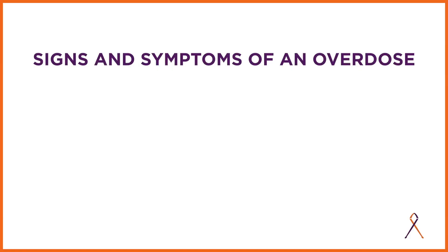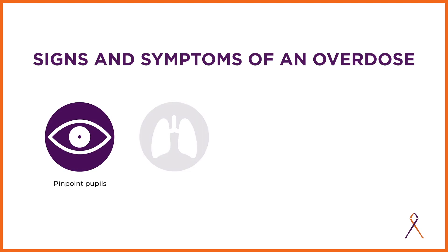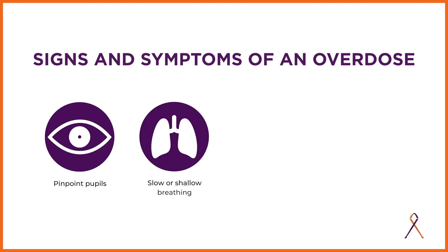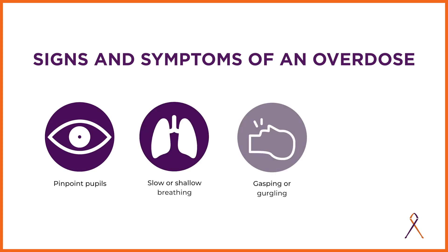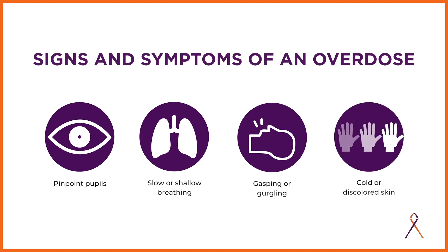A reminder: symptoms of an overdose can include pinpoint pupils, slow or shallow breathing, strange noises if someone is struggling to breathe, and cold or discolored skin, especially around the mouth, the fingers, and the eyes.